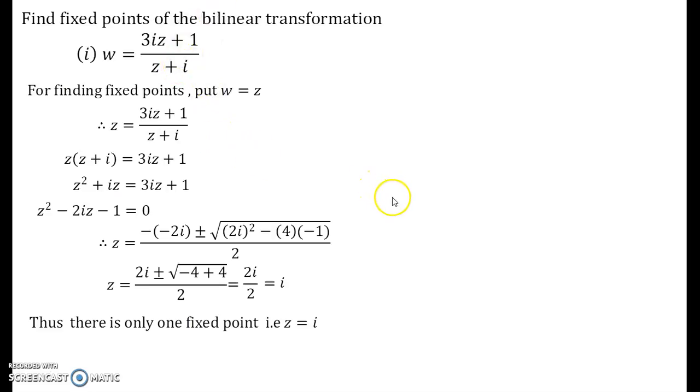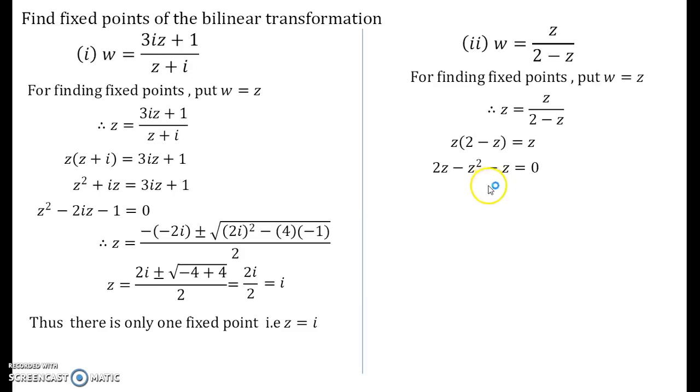Let us see one more example on this that is consider this as a bilinear transformation given to us w = z/(2-z) and we are interested in finding its fixed points. How do you go about this is that you just plug up w = z and then you obtain this expression, you solve for the quadratic, once you solve the quadratic you get z = 0 and z = 1.